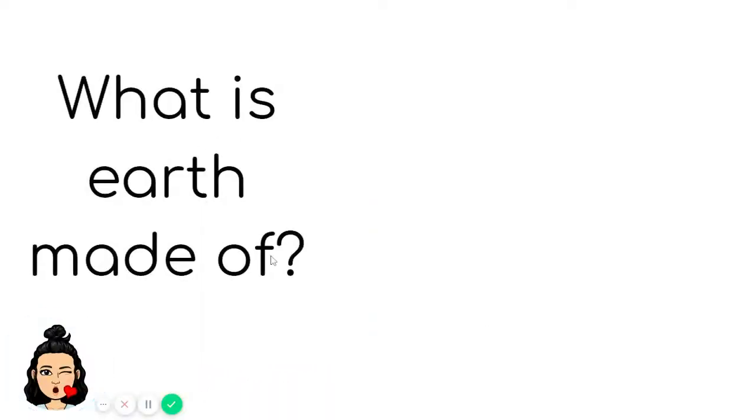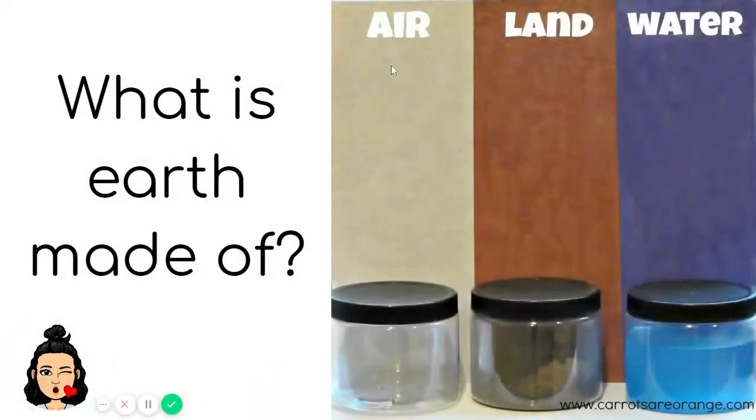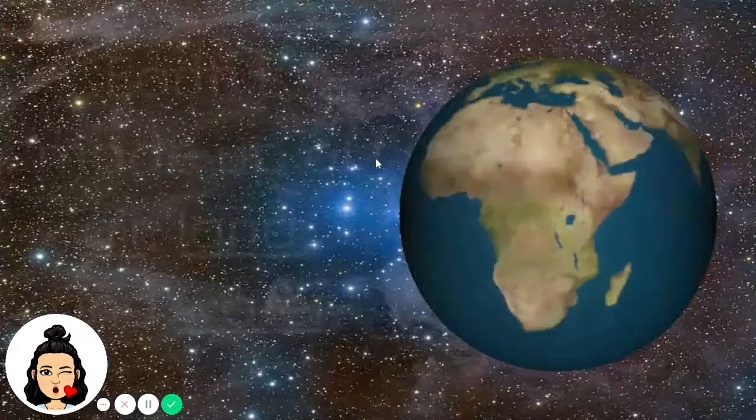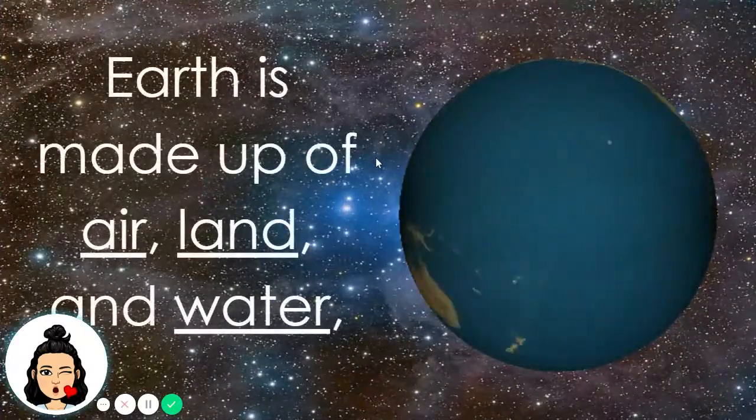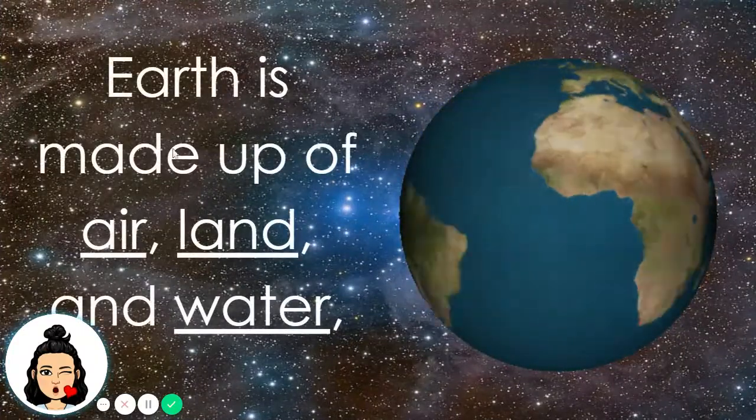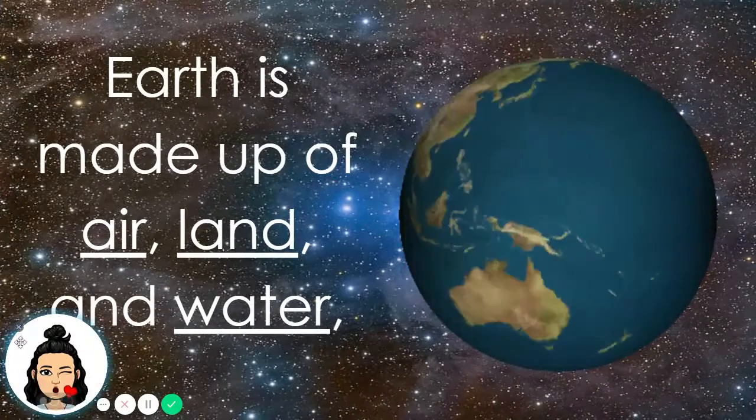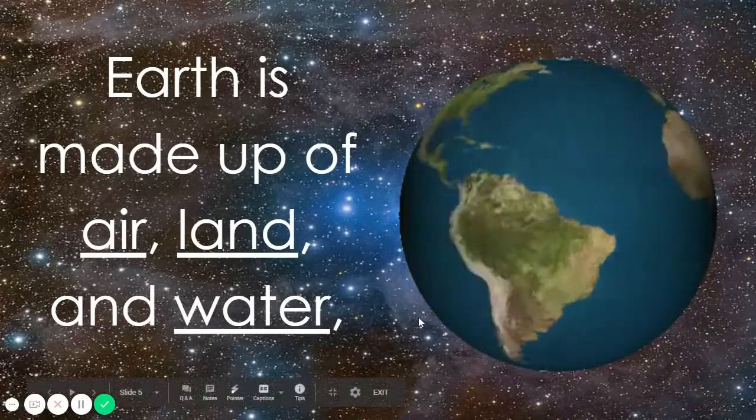What is Earth made of? Earth is made up of air, land, and water. Again, what is Earth made of? Earth is made up of air, land, and water.